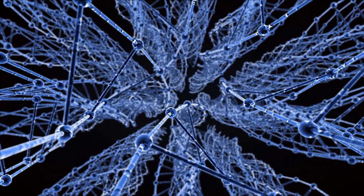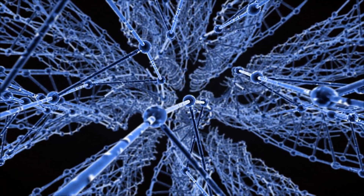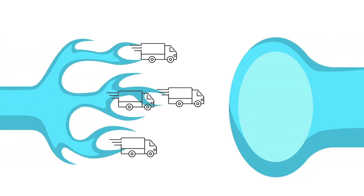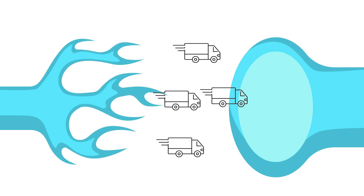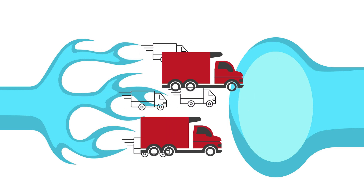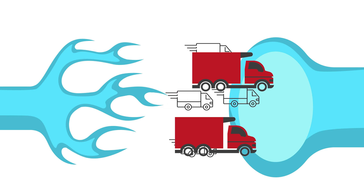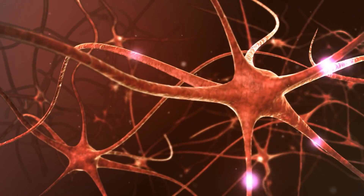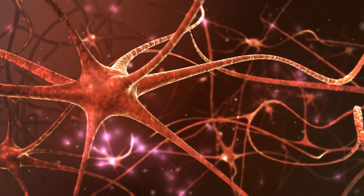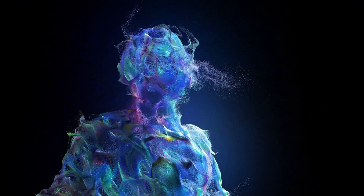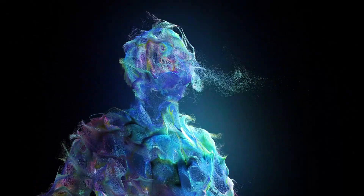Generally, hallucinations happen from chemical reactions in the body or changes in the brain. These chemicals are called neurotransmitters — the brain's messengers, zipping around and delivering important signals between neurons. The most prominent neurotransmitter is dopamine. As the brain's feel-good chemical, dopamine is involved in pleasure, motivation, and movement. When dopamine levels go haywire, it can lead to hallucinations.